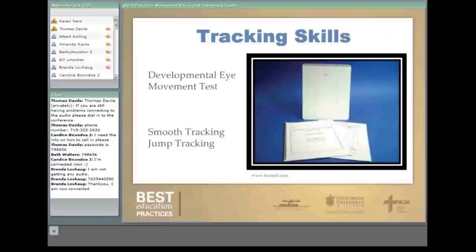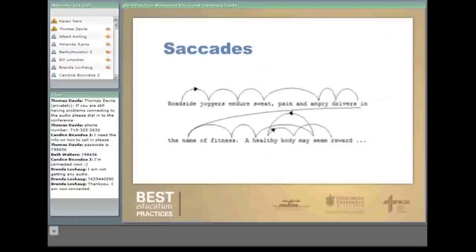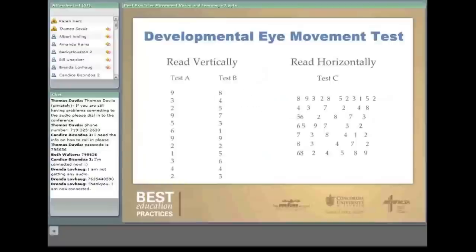For tracking skills, we use the developmental eye movement test and watch for smooth tracking and jump tracking skills. This picture shows the jumps our eyes have to make in order to read. In test A, students read 40 numbers going vertically; in test B, 40 numbers going vertically, and their time is recorded.